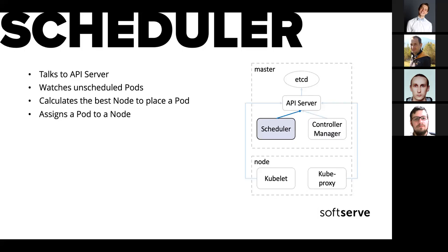The scheduler again talks to the API server and watches unscheduled pods. An unscheduled pod is a pod that is not assigned to any Kubernetes node. When it gets a notification about a new unscheduled pod, it goes through the list of nodes, evaluates which is the best place to run this pod, then assigns the pod to a specific node and stores this information in the etcd database through the API server. An important thing to understand: the scheduler and controller manager do not do any work related to actually running containers. All they do is manipulate the state of objects inside the etcd database.